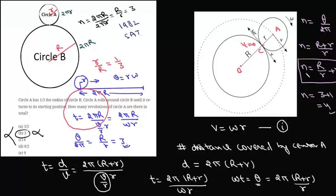So effectively, when circle A rolls over circle B, it is not covering the distance of 2πR, but it is actually covering a linear distance of 2π(R+r). The linear equivalent distance along the circle will be 2π(R+r).